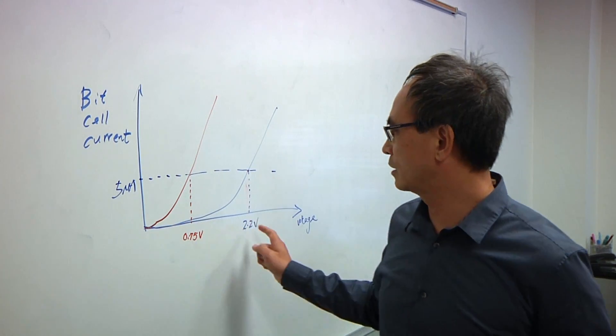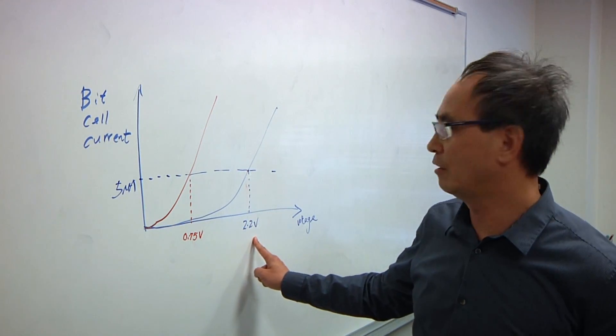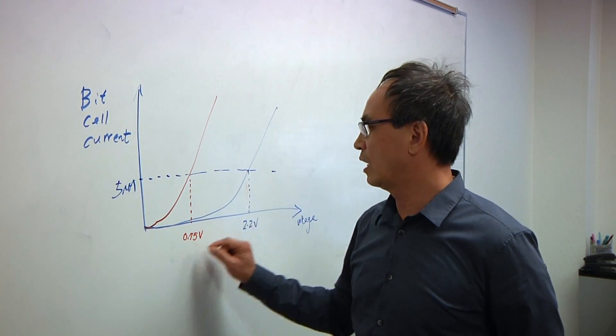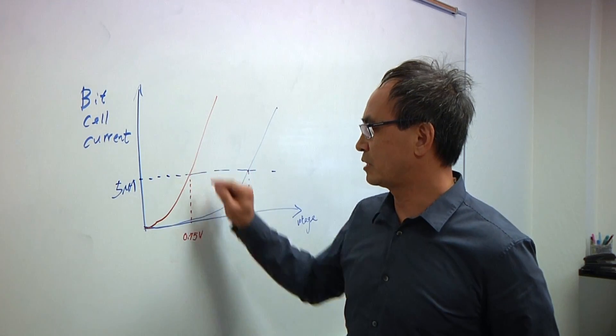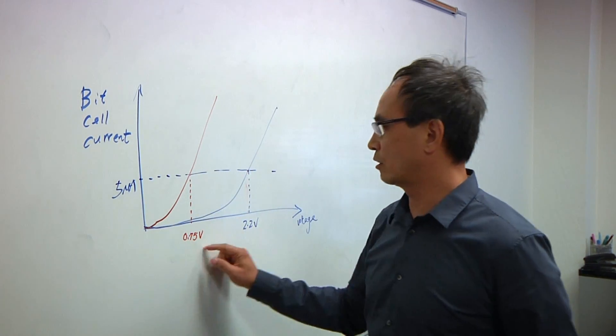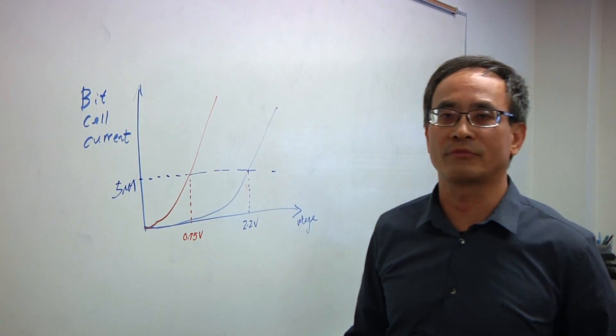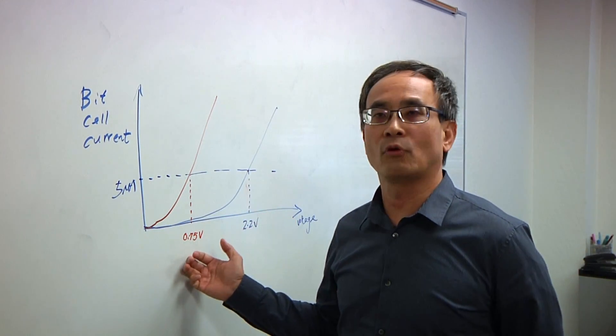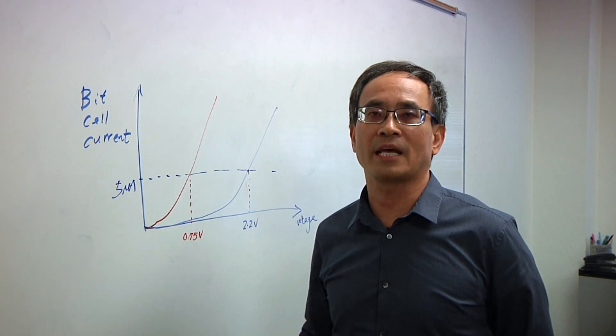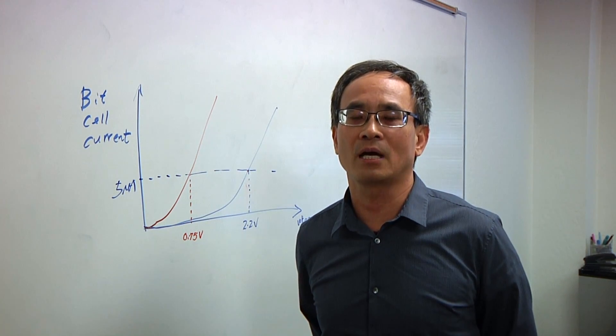This one we talk about is actually mostly dynamic read power, which is proportional to voltage squared. So if you look at the current existing dynamic voltage read at 2.2 volts, and with the new memory cell technology, we can go to 0.75 volts. So it's almost 3 times of the voltage scaling that will equivalent to almost 10x of the dynamic read power.